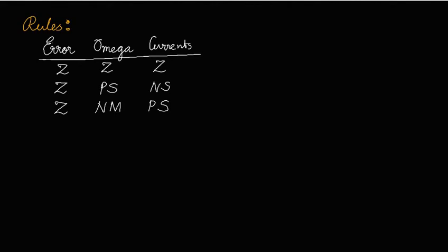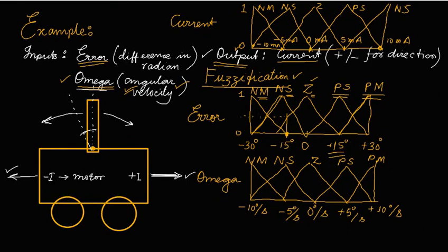The fourth rule says: if error is positive medium and omega is zero, then current is going to be negative medium. This means that when the pendulum has a positive medium angle but no angular velocity, the current should be negative medium — meaning the cart should move in the negative direction so that the pendulum can be adjusted back to vertical.